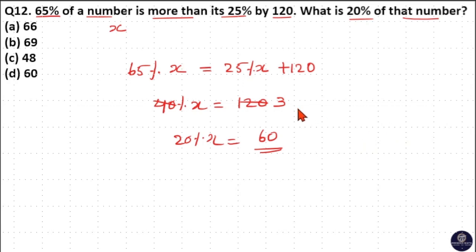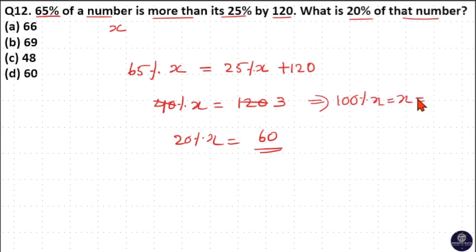Since 1% is 3, then 100% of x is 3 × 100 = 300. So the number is 300 and 20% of the number is 60. So option D is your answer.